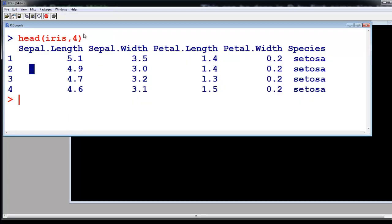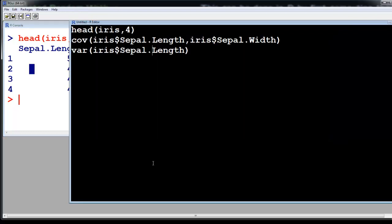The iris dataset has four columns which is full of data: sepal length, sepal width, petal length, petal width. We want to find the variance and the covariance. We are just going to find the covariance between the first two columns, that is iris sepal length and iris sepal width. This is the covariance command.